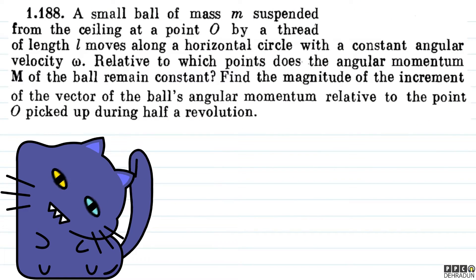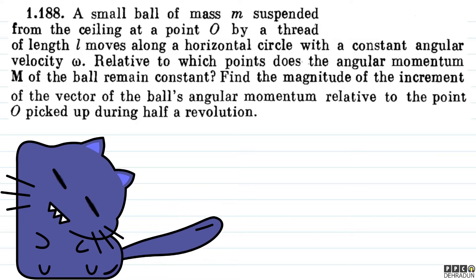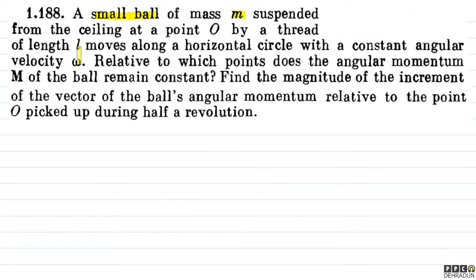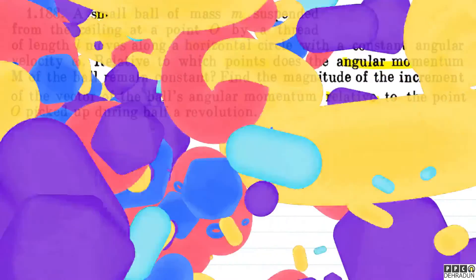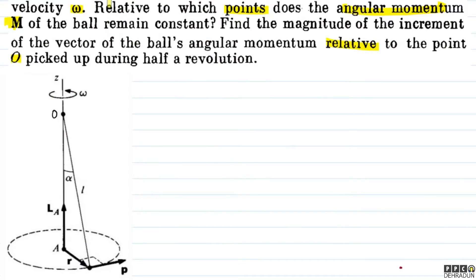Welcome students, let's look at this problem from Irodov. A small ball of mass m is suspended from the ceiling at point O by a thread of length l, and moves along a horizontal circle with a constant angular velocity omega. The question asks: relative to which points does the angular momentum vector of the ball remain constant? Find the magnitude of the increment of the angular momentum vector relative to point O during half a revolution.